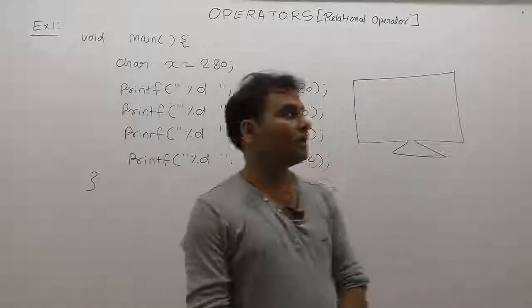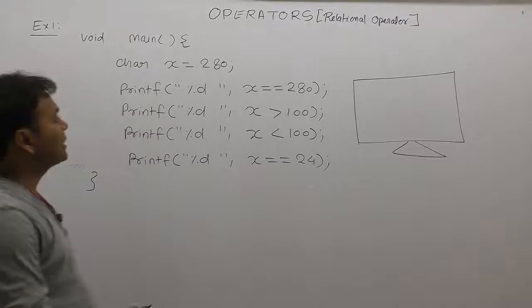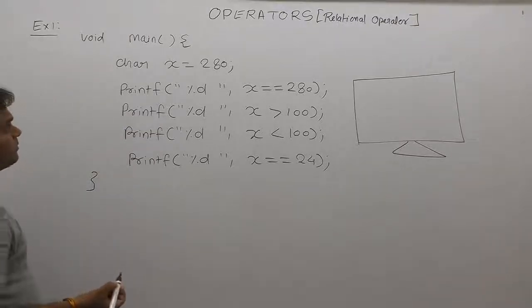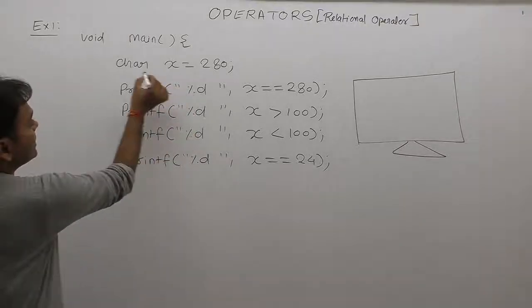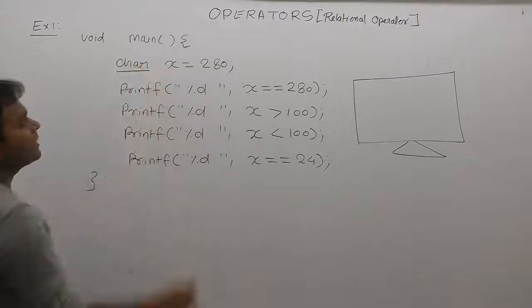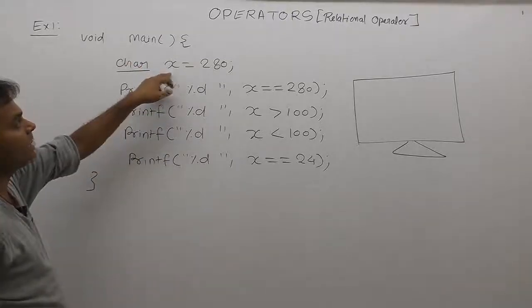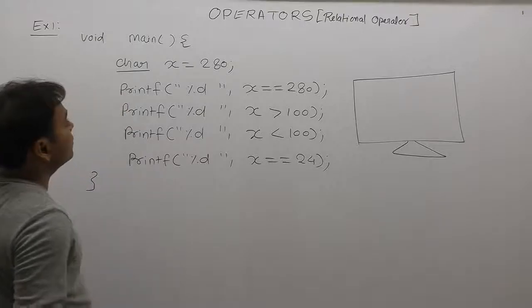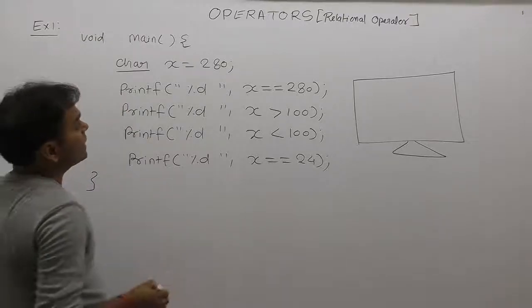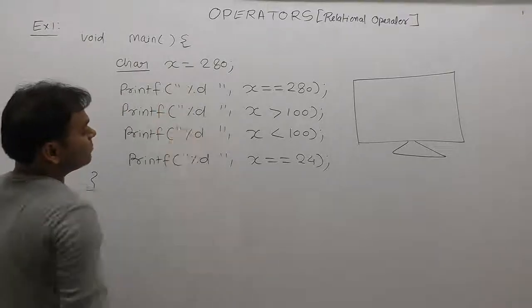Next example of relational operators given. In that case, we are taking some variables - concentrate on its data types. What is the data type of x? Here, x is a character type of variable. Therefore, what is the size of x? It will take 1 byte.